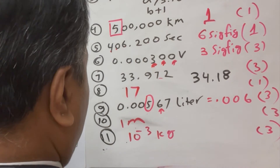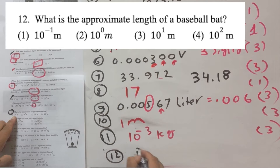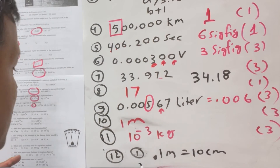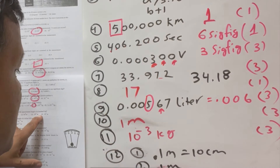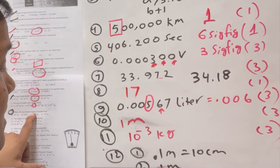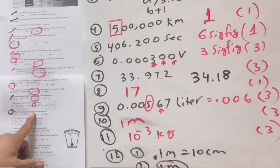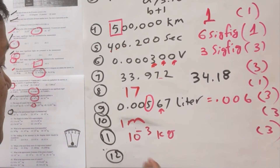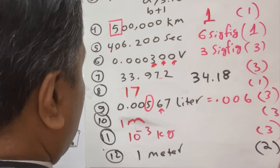Number twelve: the approximate length of a baseball bat. The options are 0.1 meter, 1 meter, 10 meters, and 100 meters. A baseball bat is never 10 centimeters, 10 meters, or 100 meters — it is approximately one meter. The answer is option number two.